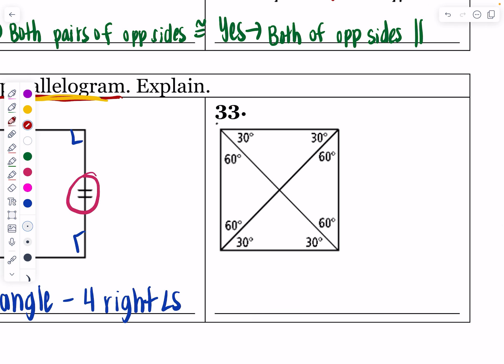Number 33 has some numbers in it. What is 60 plus 30? That's a 90 degree angle. All of these end up being 90 degree angles, so this ends up being a rectangle. We don't know anything about the side length, so I can't more specifically say that it's a square. All I get to say is that because it has those four right angles, I know for sure it's a rectangle. If I had more information, I might be able to say square, but I do not have that information at this time.